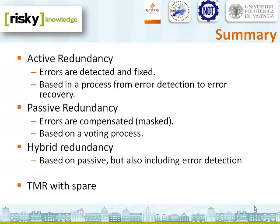To summarize what we have studied, there exist three types of hardware redundancy. Active hardware redundancy, that achieves fault tolerance by detecting the existence of faults and performing some actions in order to remove the faulty hardware from the system. Passive hardware redundancy, that masks the faults and achieves fault tolerance without requiring any action from the system. And hybrid hardware redundancy, that combines features of both the passive and active approaches. We have also seen an example of how hybrid redundancy works — a TMR system with a spare, that allows tolerating two faults using just four modules.